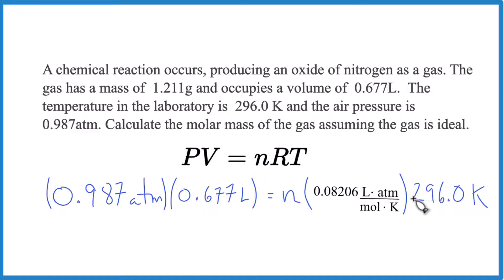So I've put all the values here in PV equals nRT. We have our pressure in atmospheres, and because atmospheres, we have that pressure there in atmospheres, this is the value for R we'll use. It has atmospheres right in the units.